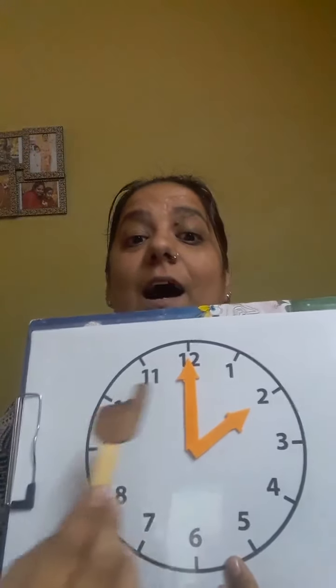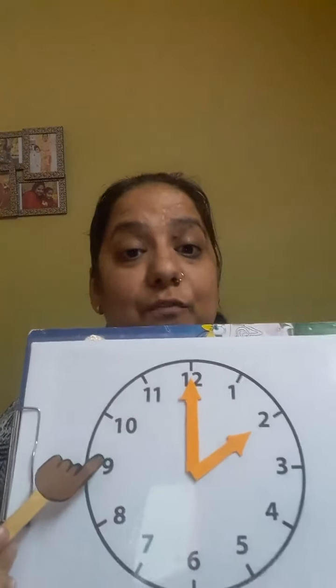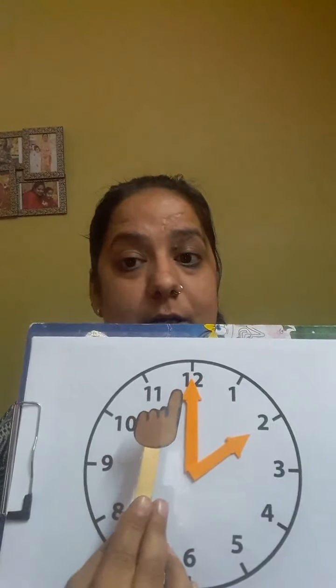Let me show you a clock. This is a clock, and this is a clock face. It has numbers from 1 to 12, with 12 at the top, and it moves from left to right — like this.